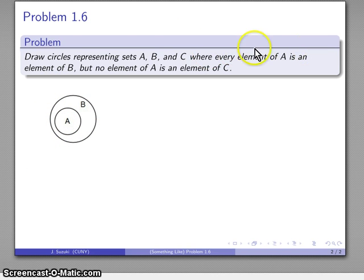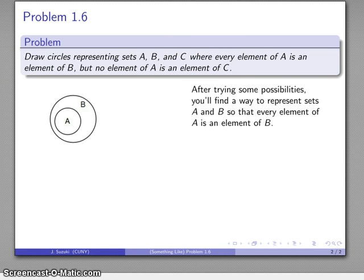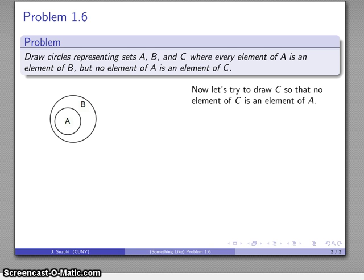We need that third set C. Let's see if I can draw a third circle. Let's try and draw C. I'll try some random drawings of that set C and see where it fits. Maybe I'll draw something like this. Well, I need to make sure that no element of A is an element of C. Here I can have something that is an element of A and also an element of C, so this circle doesn't work.